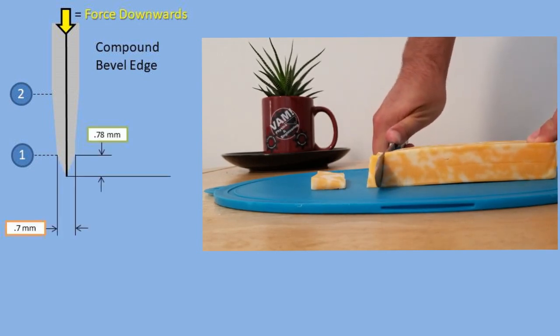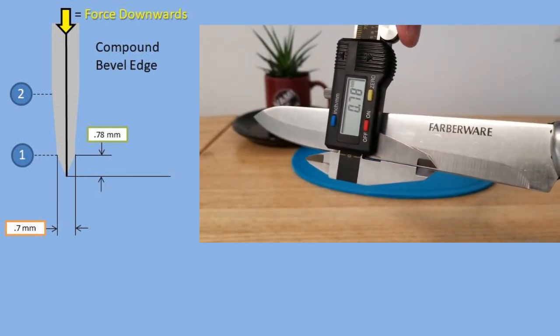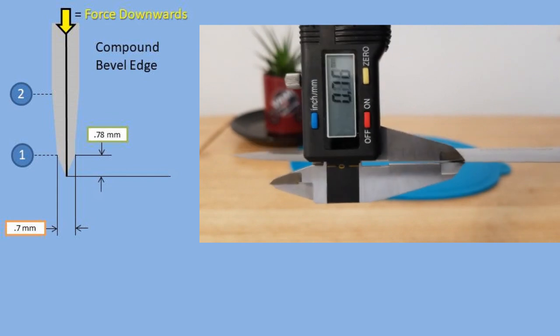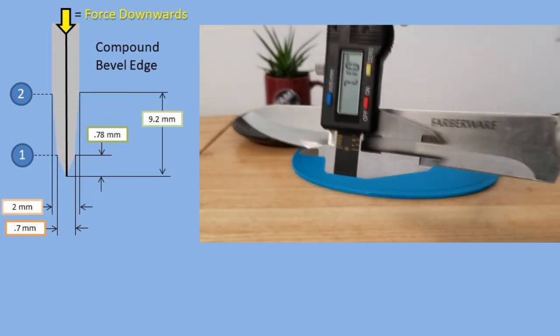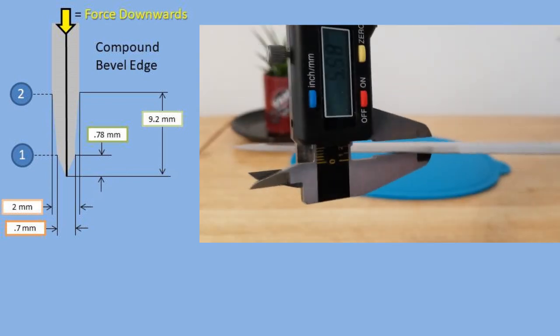So we will be finding the mechanical advantage at two points. The first point has a length of 0.78 millimeters and a thickness of 0.7 millimeters. The second point has a length of 9.2 millimeters and a thickness of 2 millimeters.